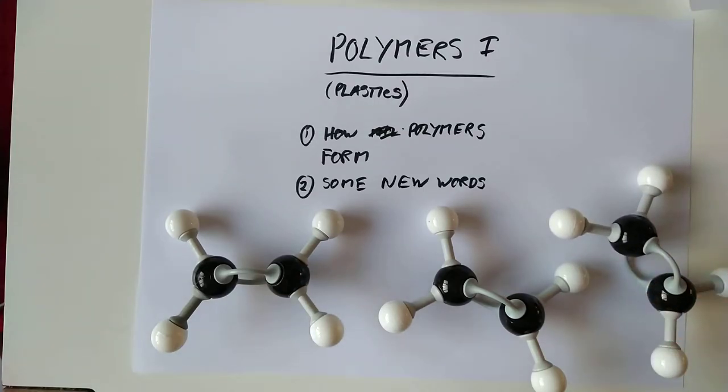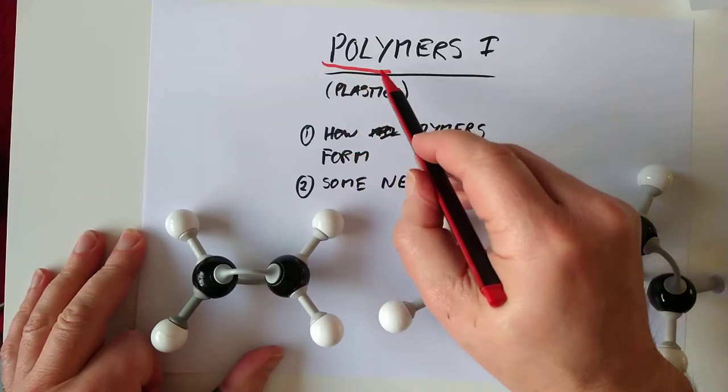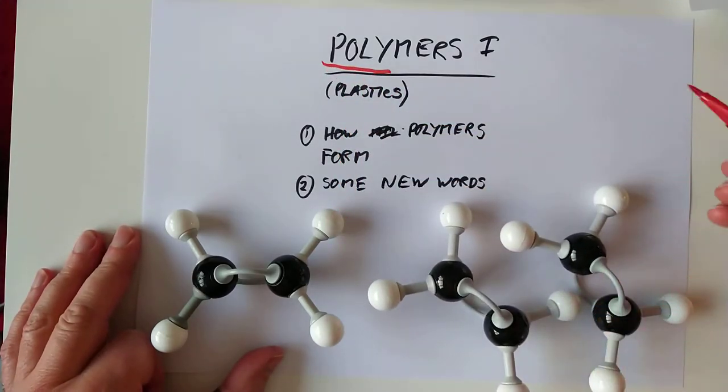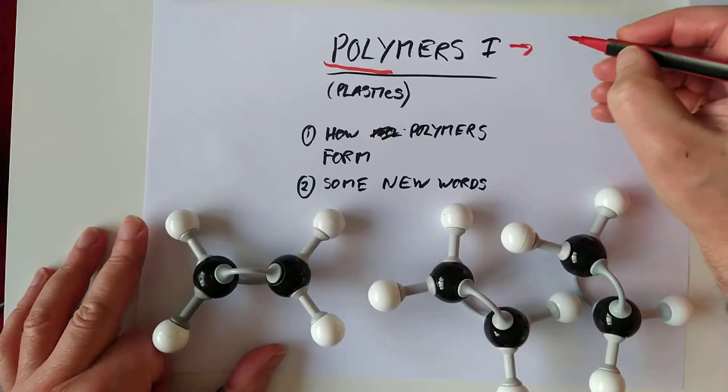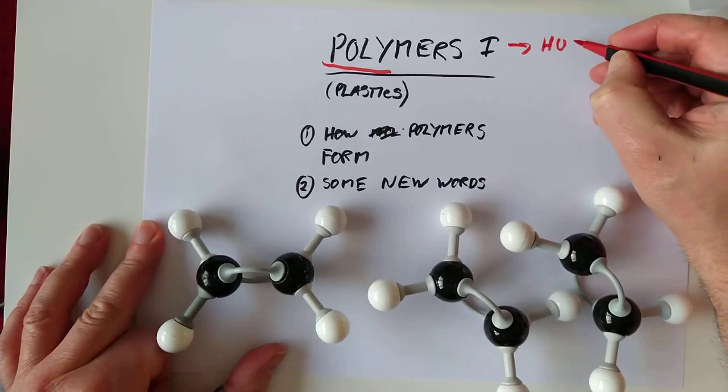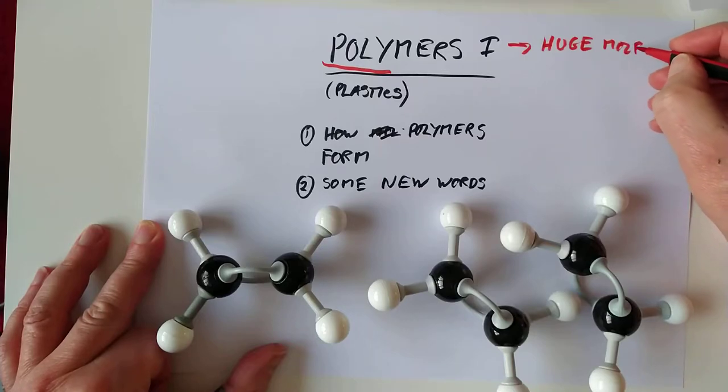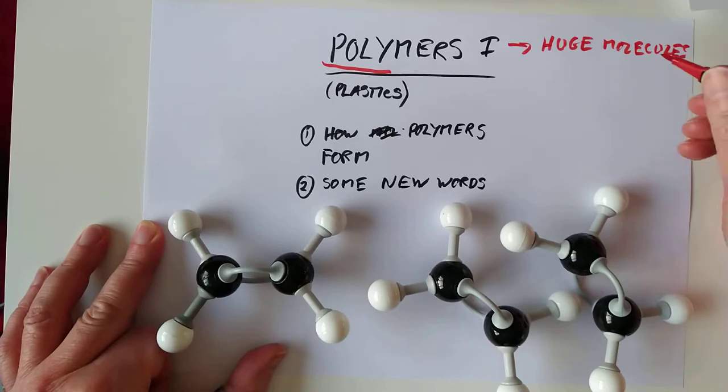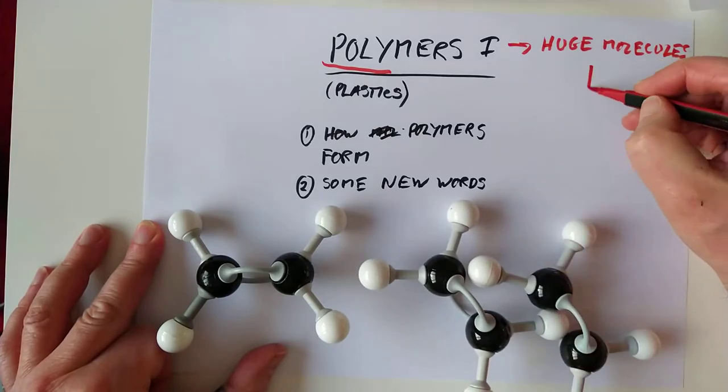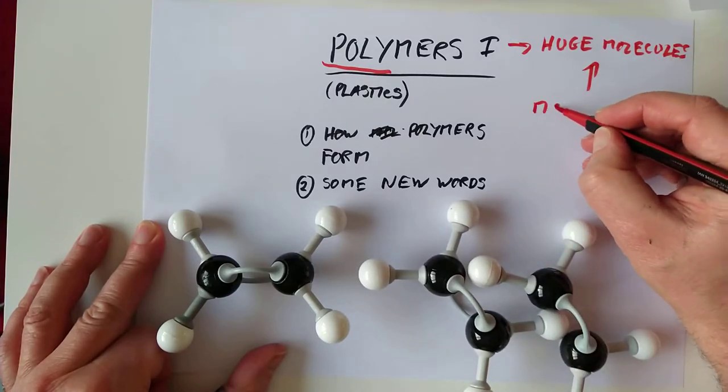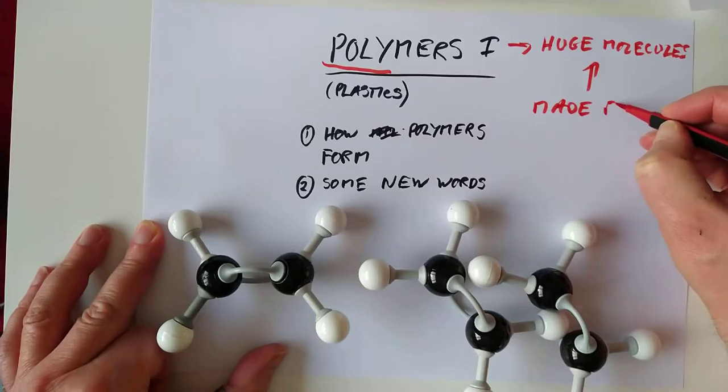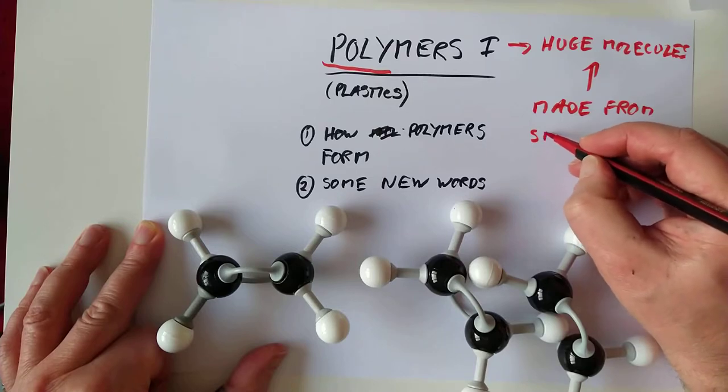And let's revise our definition of what a polymer is. Poly means many. So a polymer is basically a huge long molecule made by stitching many, many smaller molecules together. So polymers are just huge molecules and they're made from smaller molecules joined together.